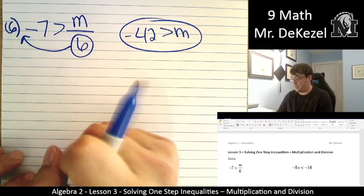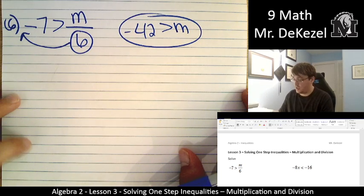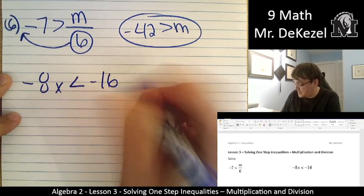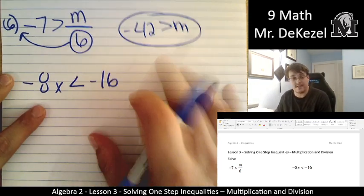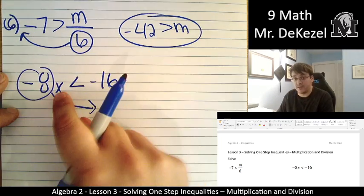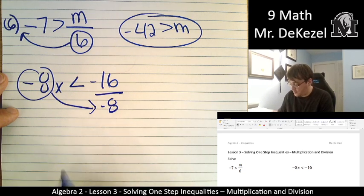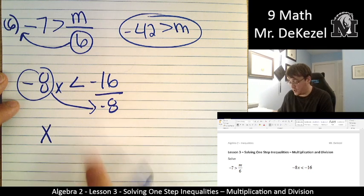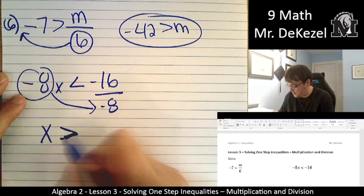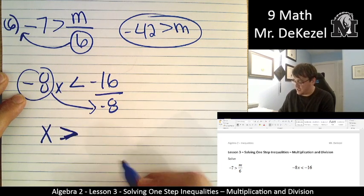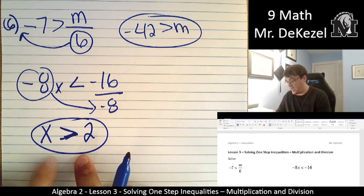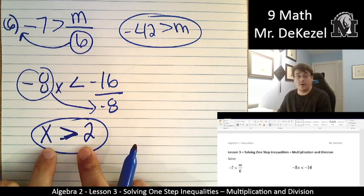In the next problem, though, you're going to see what I mean when I say we flip the direction of the inequality. Okay, this one we have minus 8x is less than minus 16. We are trying to get x all by itself, so we're going to move this minus 8 across to the bottom. It's multiplied here, so it's going to be divided on the other side. So then x is left alone on this side, but we're dividing by a negative number. So we're going to flip the direction of the inequality. And then minus 16 divided by minus 8 is 2. And there we have it. That is our answer. We have x on the left-hand side. We flip the inequality, got the answer as 2.